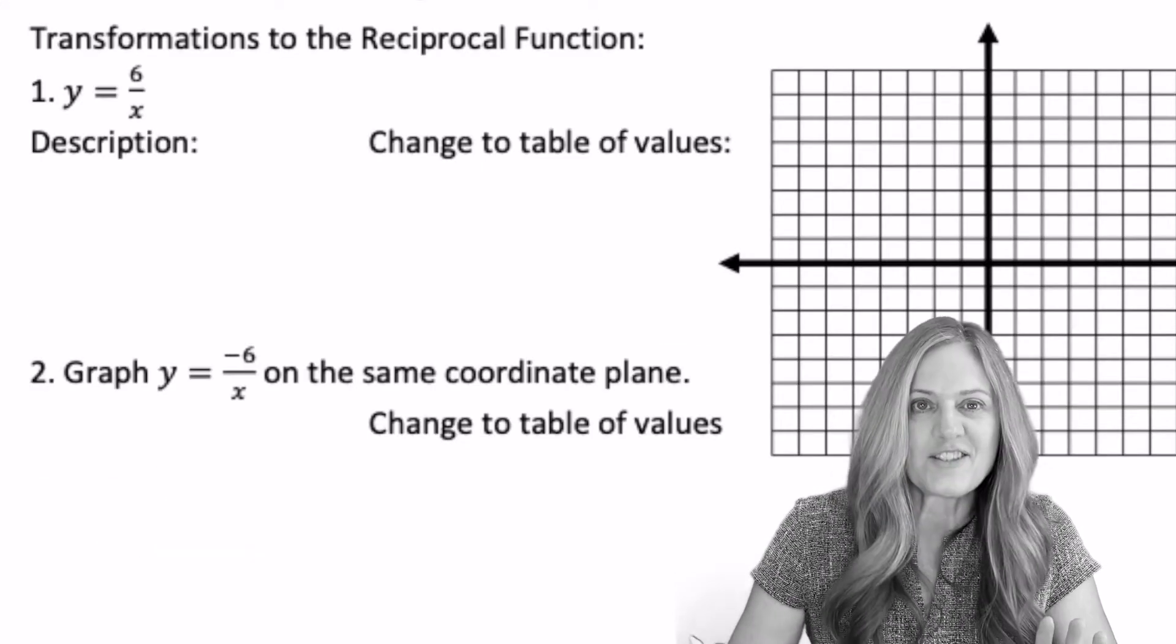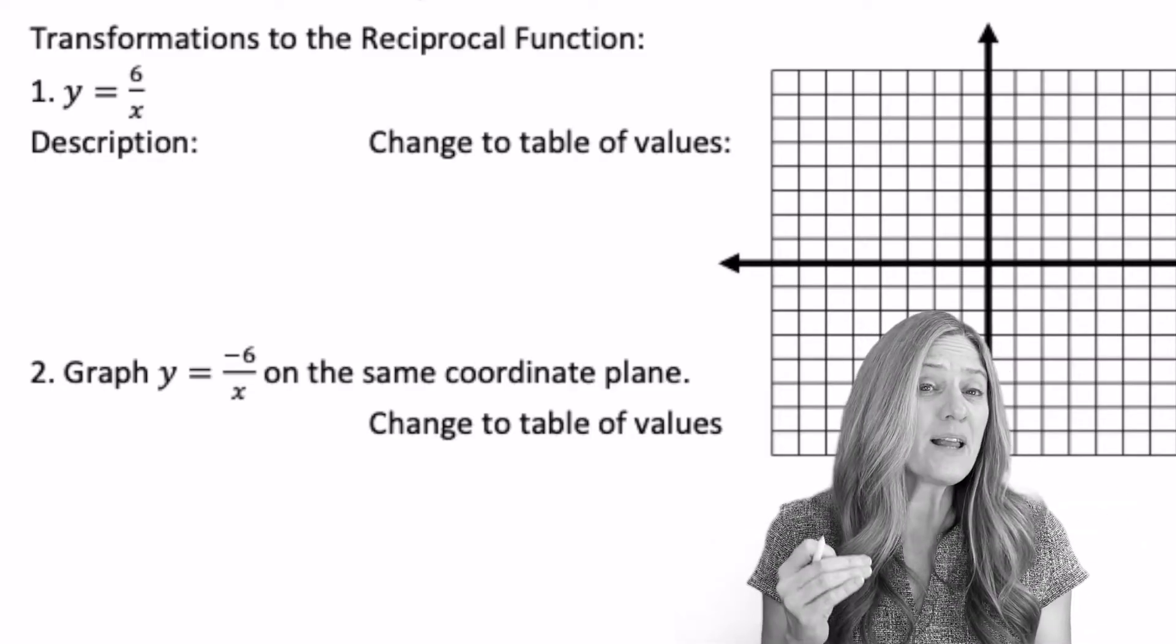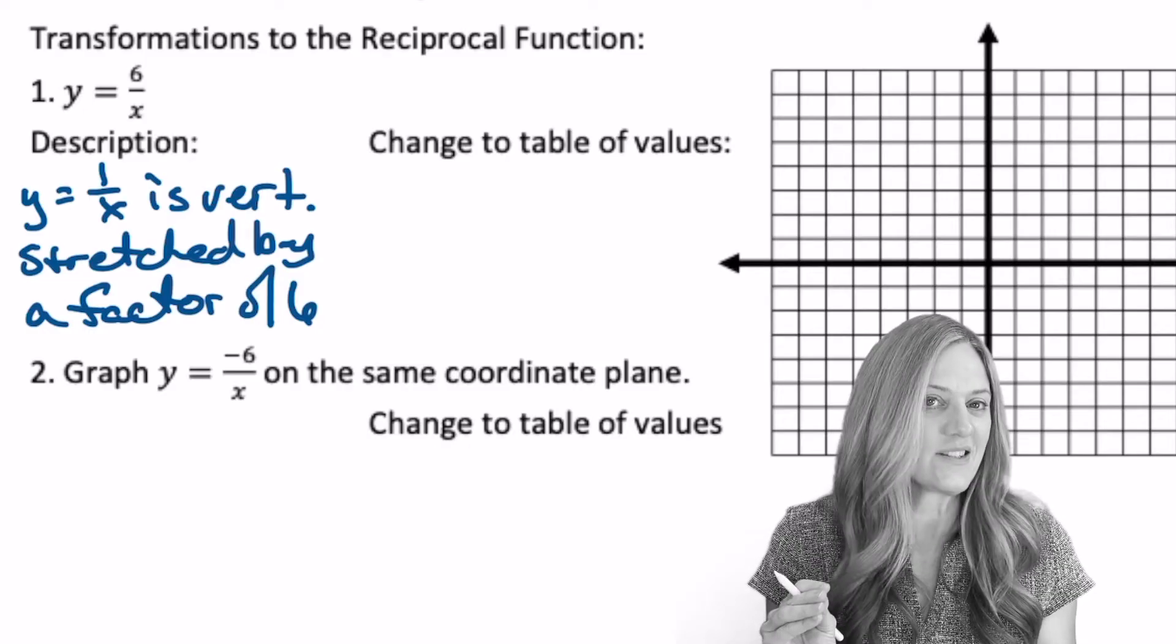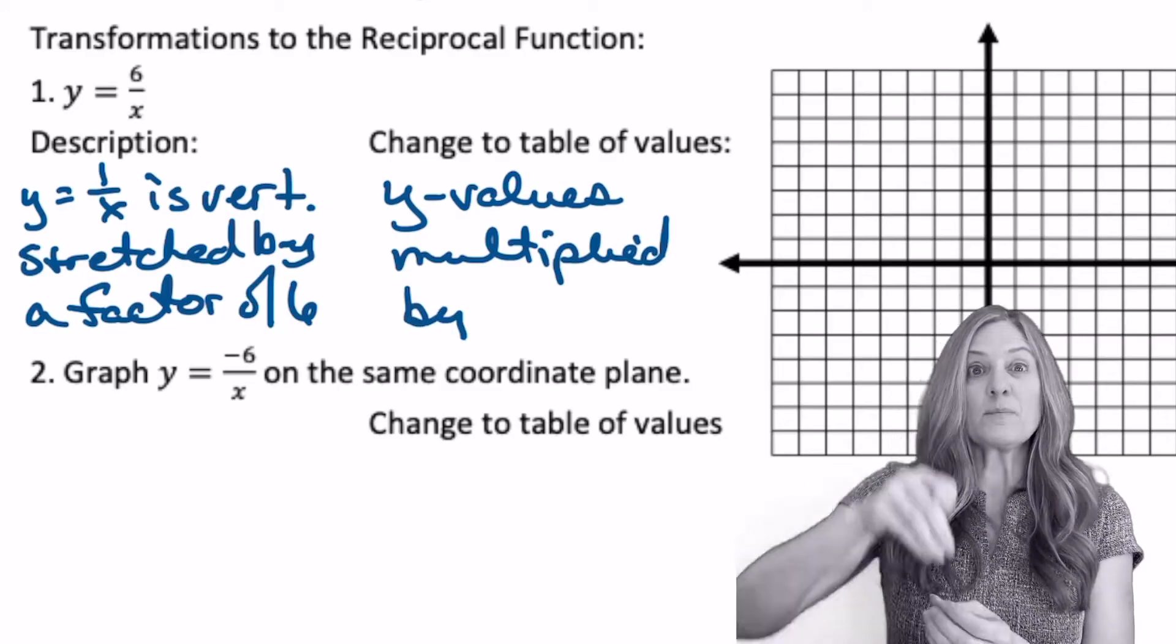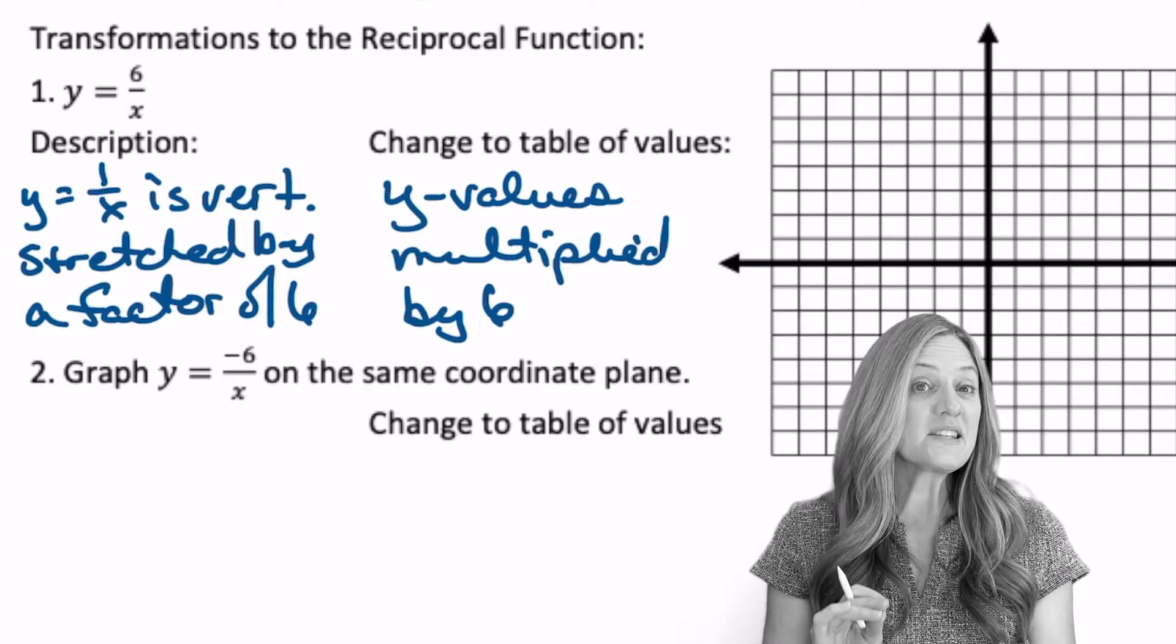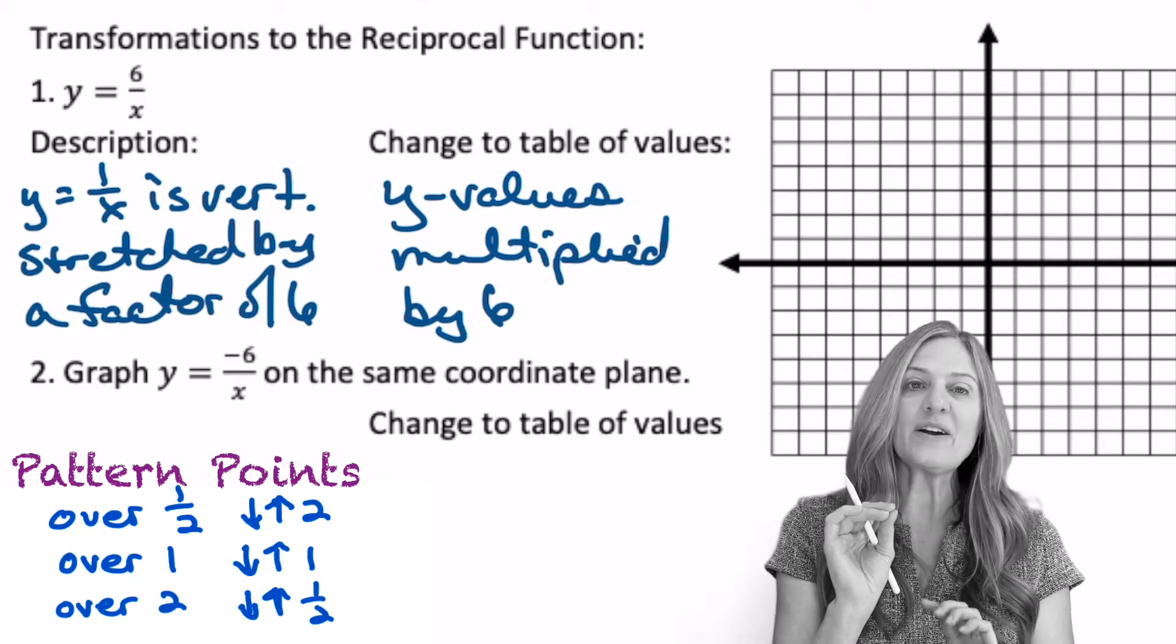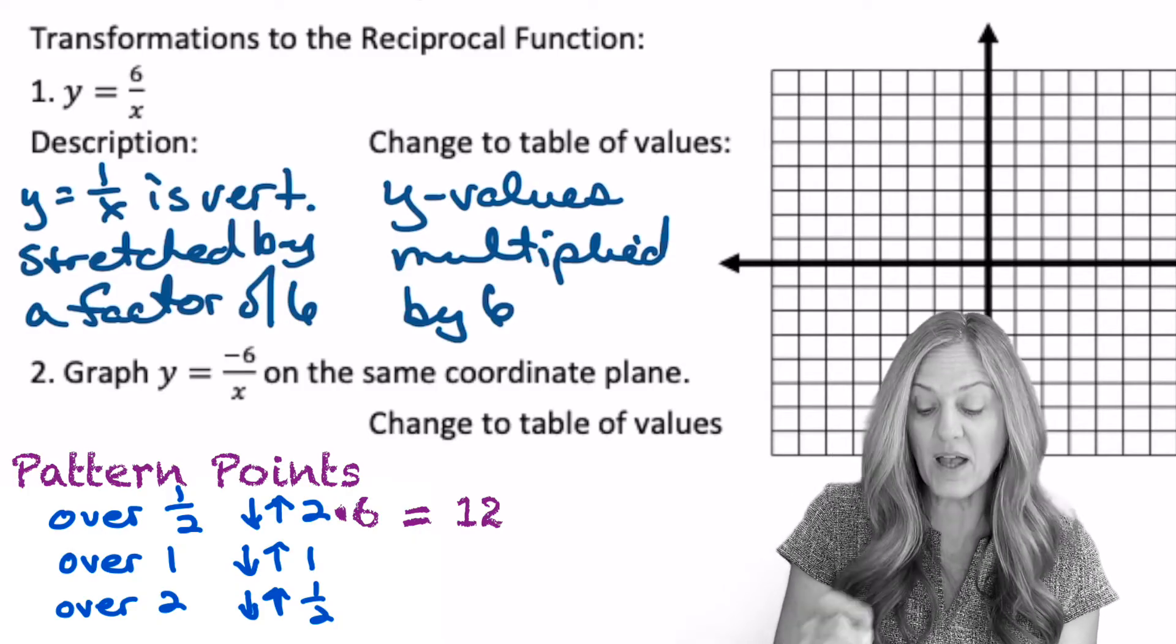Now let's look at transformation. So I see y equals 6 divided by x. So what's happened there? Well, they've multiplied by 6. So that's going to be a vertical stretch by a factor of 6. What changes there? How does that change my table of values? Well, every y coordinate is going to be multiplied by 6. So knowing that we have a vertical stretch by a factor of 6, when I think about my pattern points, normally I go over 1 half and up 2. But now the y values have been multiplied by 6. So I'll go over 1 half, up 12. Let's plot that. Yikes! That was way off the graph.